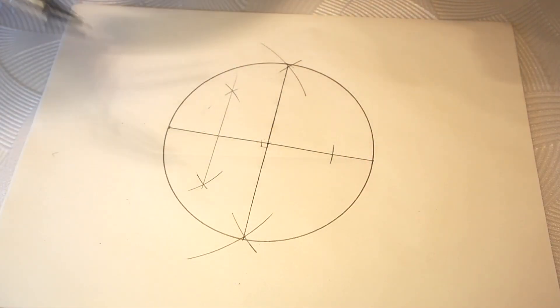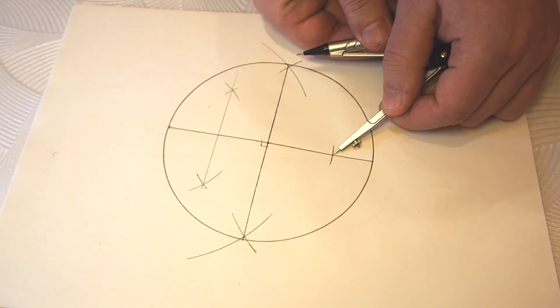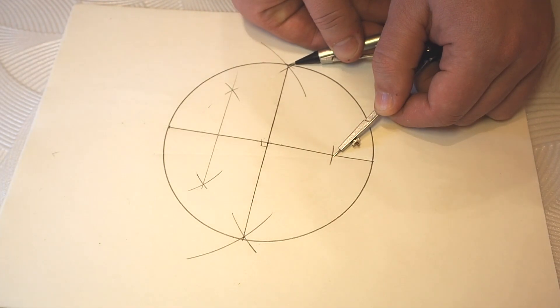Now we need to measure this length between two points. You need to be very accurate with the compass to get a regular star in the end. This length will help us to divide our circle into five equal parts.